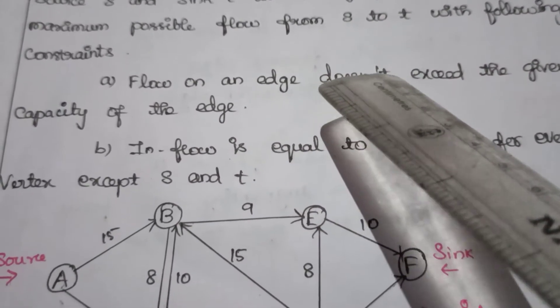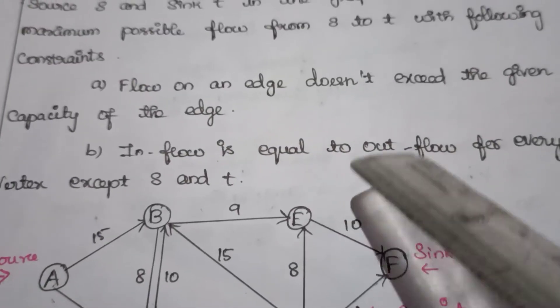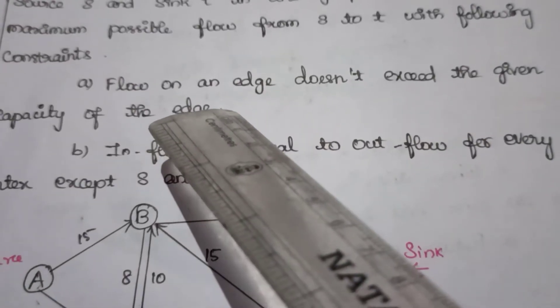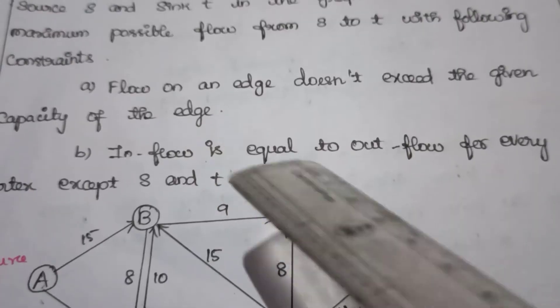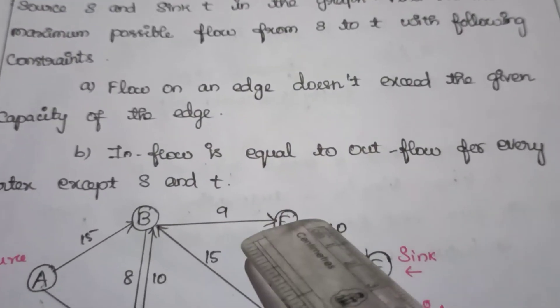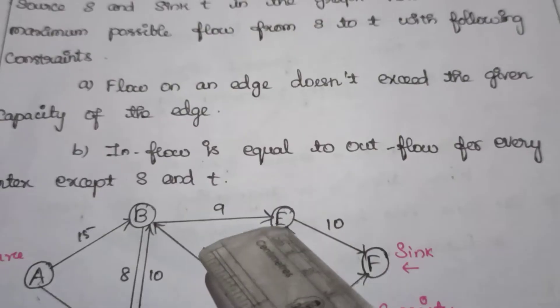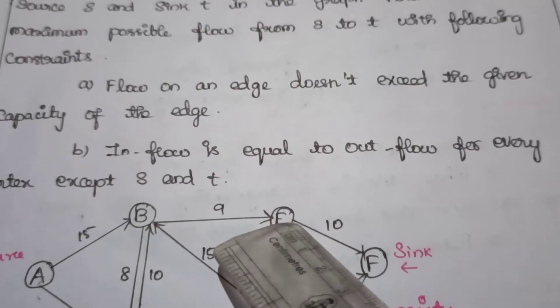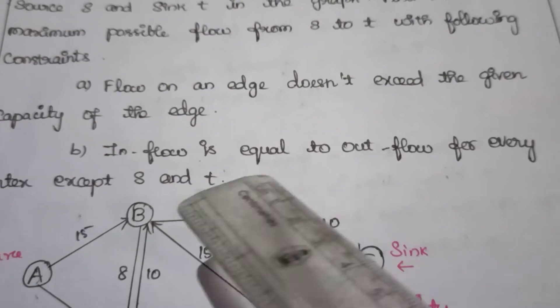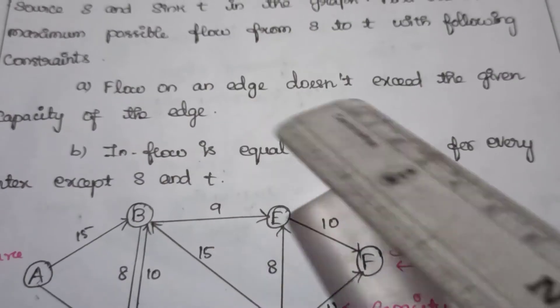In this method we are going to follow these two constraints. To make a live example, let us consider the edges as pipelines and the weight of the edges as the capacity of the flow over the pipeline. Our main objective is to find the maximum flow among the given network.